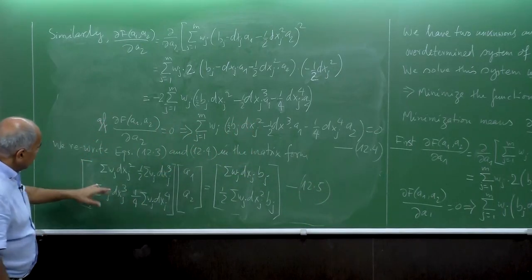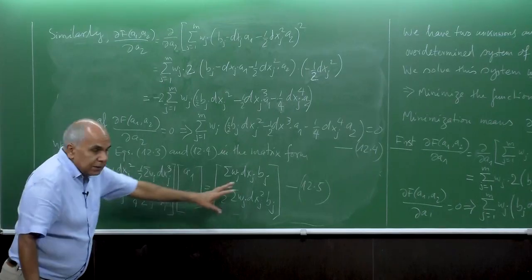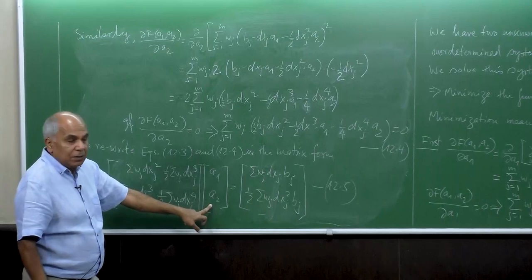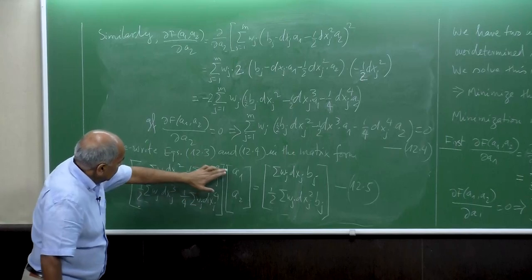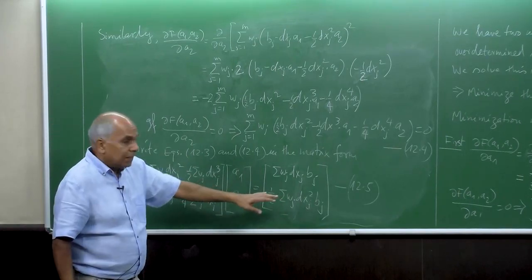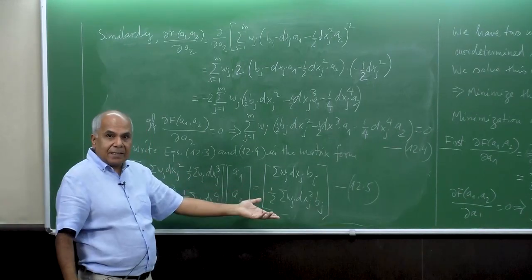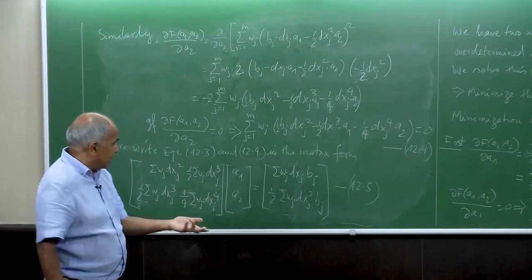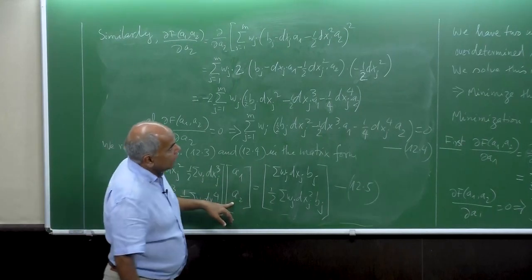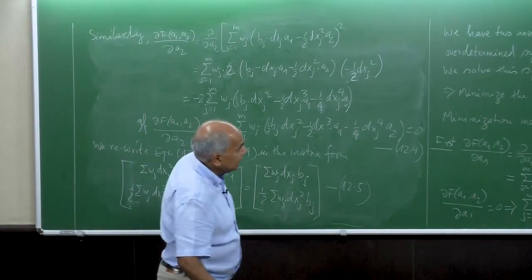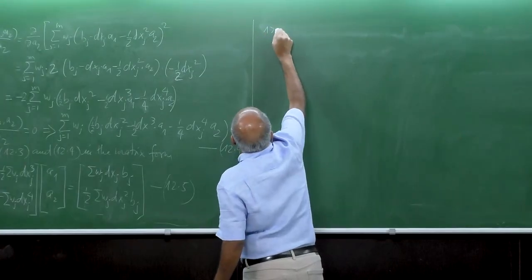We get a symmetric 2×2 system with two unknowns a1 and a2. If this matrix is not singular, we can take the inverse and get a1 and a2. Up to a 3×3 matrix you can analytically invert. The matrix is singular only if all points lie on the same x_0, giving all dx_j equal to 0 — that will not be the case. So we get a1 and a2 by multiplying the inverse of the matrix by the right-hand side vector.